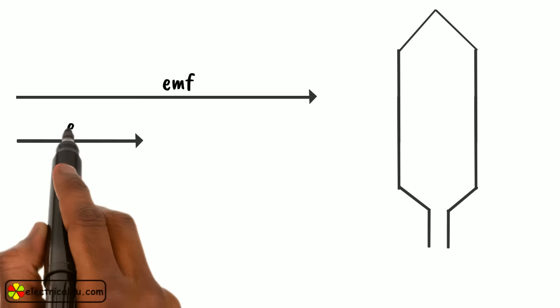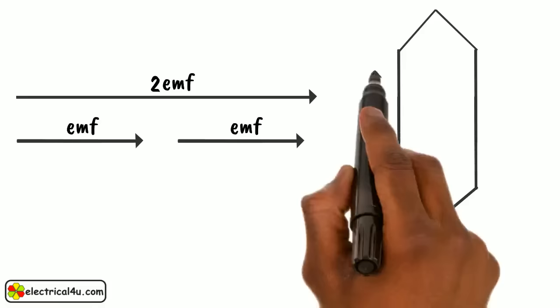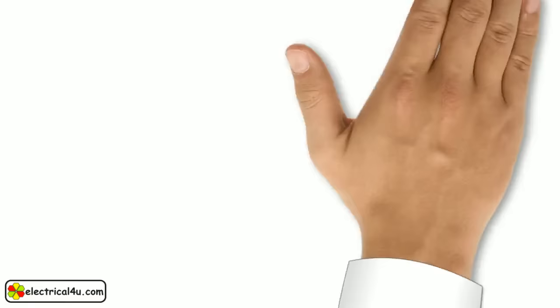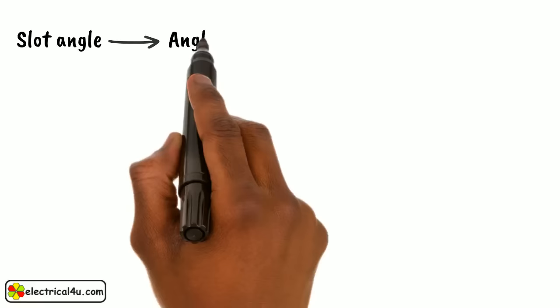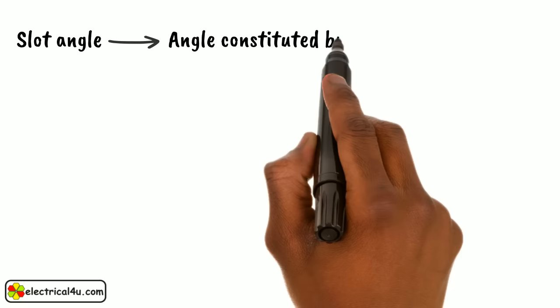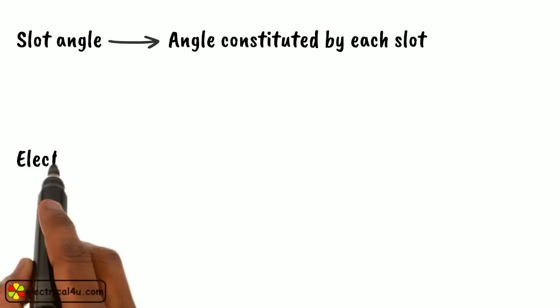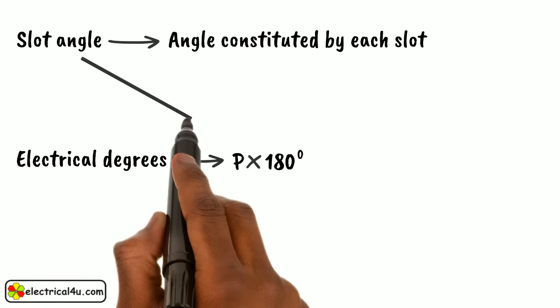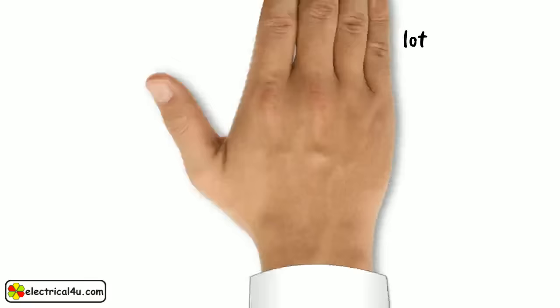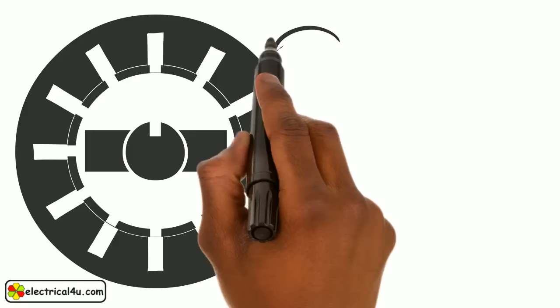In a full pitched coil, the resultant EMF is the arithmetic sum of EMFs induced in the coil sides of that coil. In order to know about coil span for short pitch winding, first of all, let us know about slot angle. The angle constituted by each slot in electrical degrees in a rotating electrical machine is called the slot angle. In a machine, the total electrical degrees is p into 180 degrees, so the slot angle of each slot is p into 180 degrees by s. In the above example, the slot angle is 2 into 180 degrees by 12, which is 30 degrees.